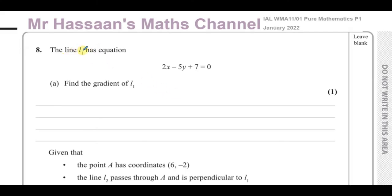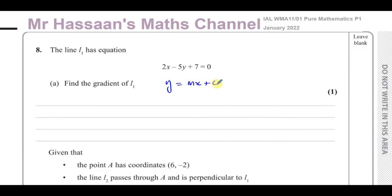It says the line L1 has equation 2x minus 5y plus 7 equals 0. Find the gradient of line 1. When an equation is expressed in the form y equals mx plus c, where y is the subject, the coefficient of x is the gradient and the constant is the y-intercept. So we want to make y the subject.